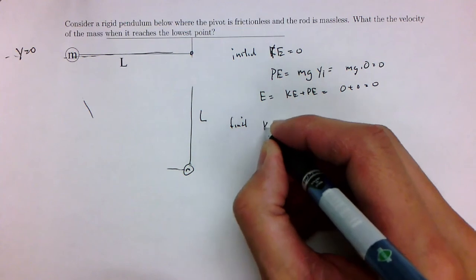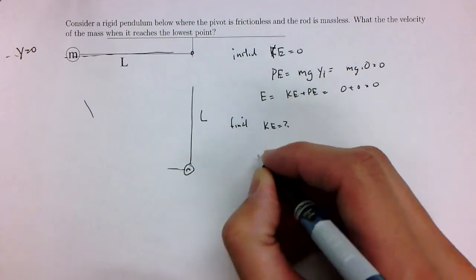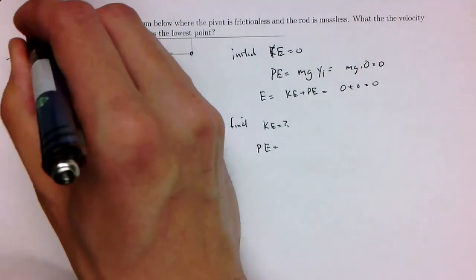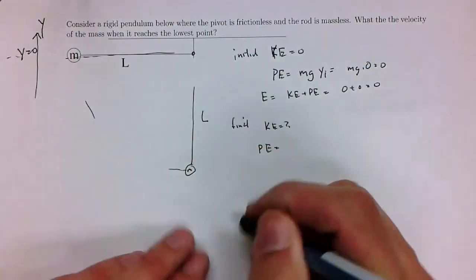So the final state kinetic energy is something I do not know. The potential energy, on the other hand, so the y-axis, assume it's basically pointing up this way. It's the y-axis, so it's getting a negative.